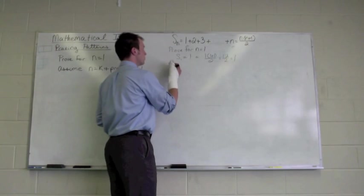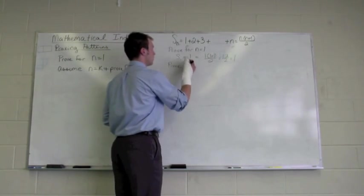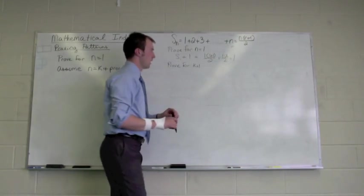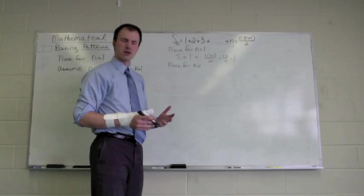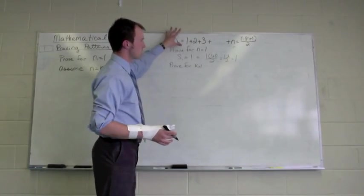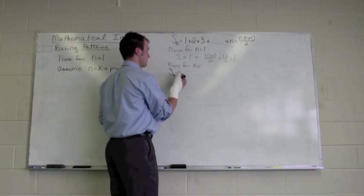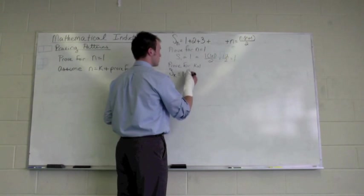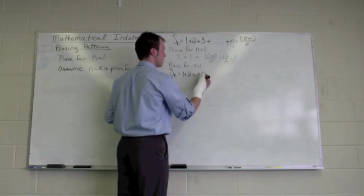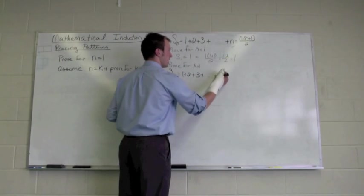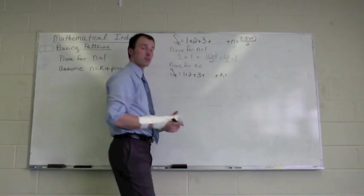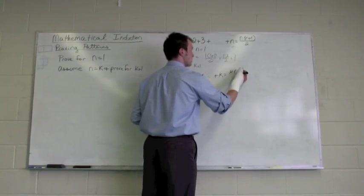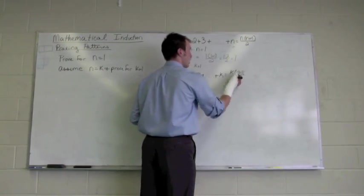So now what we need to do is prove for k plus 1. And what we really should do is take a look at what this is going to look like, or how this changes. So s sub k, the sum of the first k integers, would be 1 plus 2 plus 3 plus on and on, all the way out to k. And really, the formula there is going to be k times k plus 1, all divided by 2.